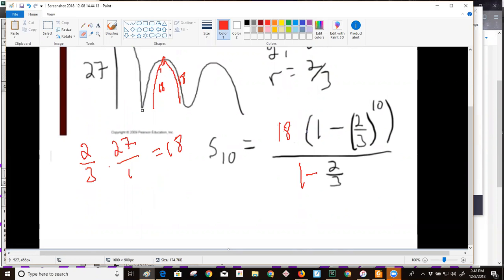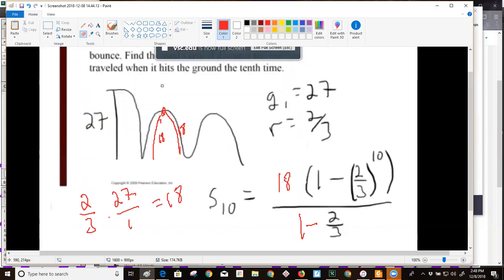After the first drop of 27 feet, it doesn't return that. It bounces up 18 feet because it returns two-thirds of it. Then it travels back down the 18 feet.